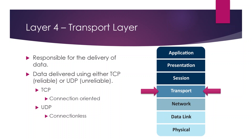UDP is unreliable in comparison — it lacks the back-and-forth confirmation TCP uses and has a simpler header, making it faster. UDP is commonly used for streaming audio, video, teleconferencing, and video conferencing, where speed matters more than guaranteed delivery.